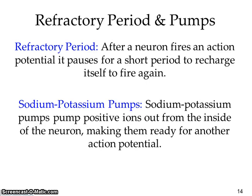After a neuron fires, there's a refractory period, which is just a recharge period. The neuron has to go through the whole process all over again. Sodium-potassium pumps then pump the positive ions out from the inside of the neuron, making them ready for another action potential, so that the neuron can fire off again.